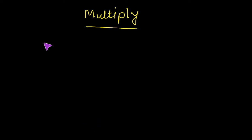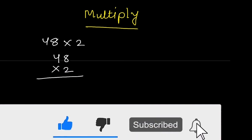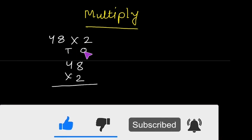Now we solve another problem: 48 times 2. Line up the numbers vertically. 4 tens and 8 ones is multiplied by 2.